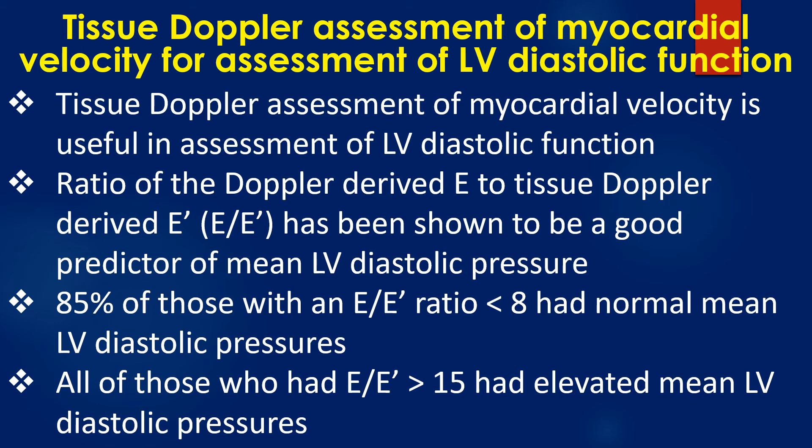85% of those with an E by E prime ratio less than 8 had normal mean left ventricular diastolic pressures. All of those who had an E by E prime ratio greater than 15 had elevated left ventricular diastolic pressures.